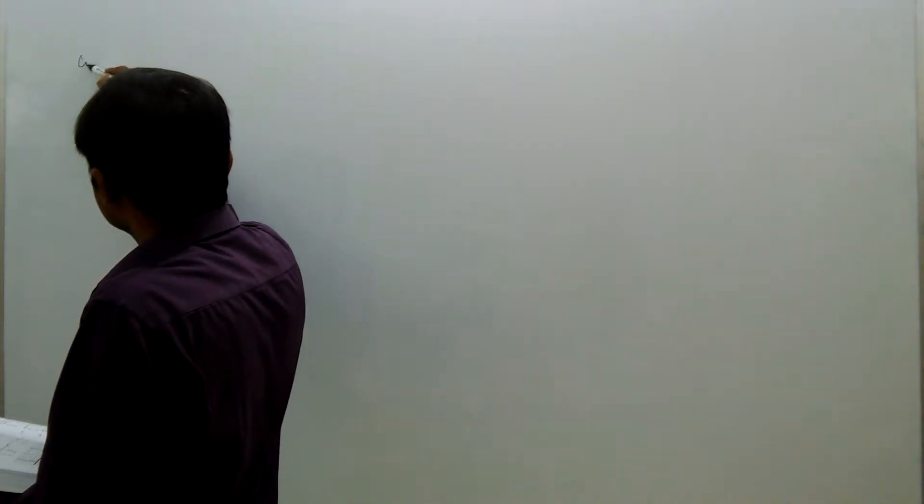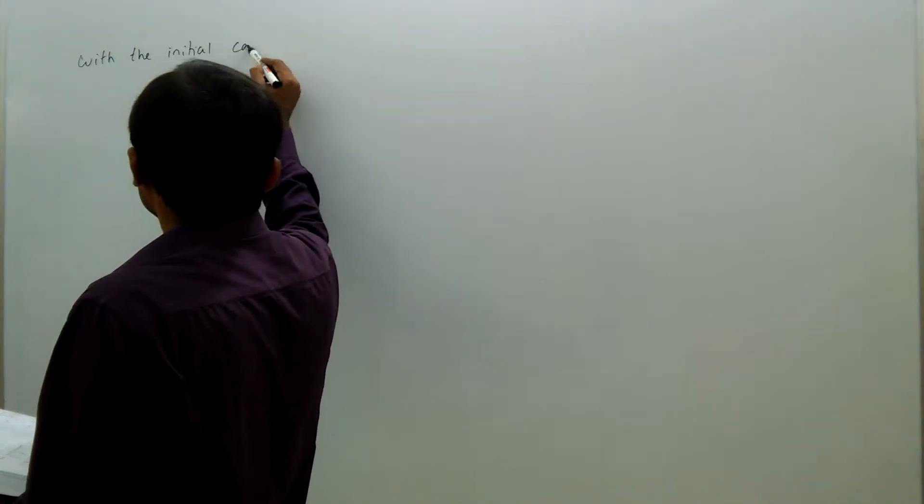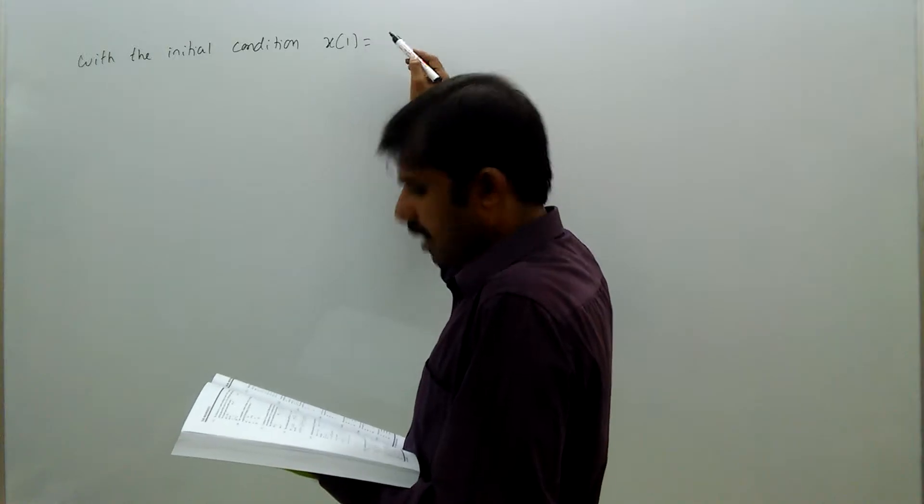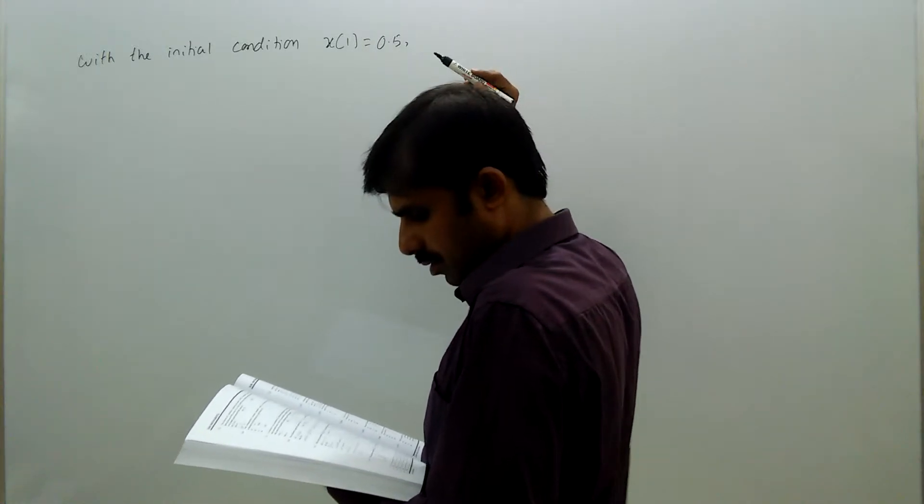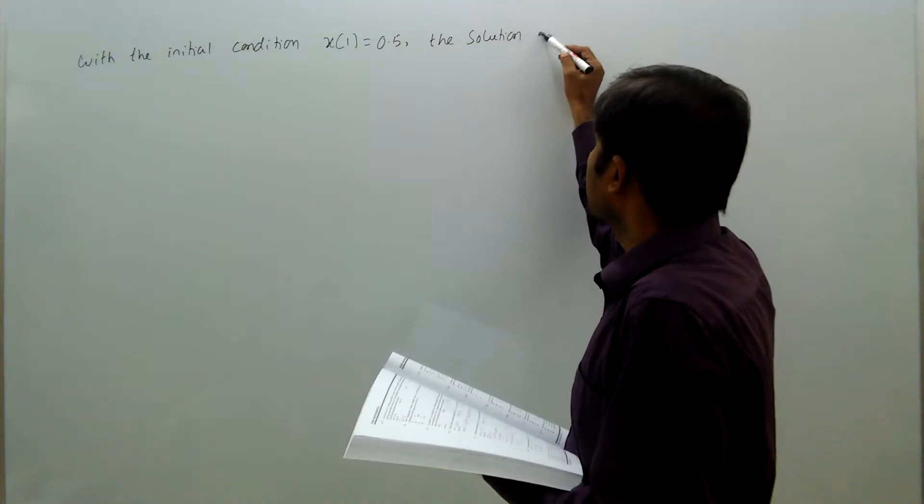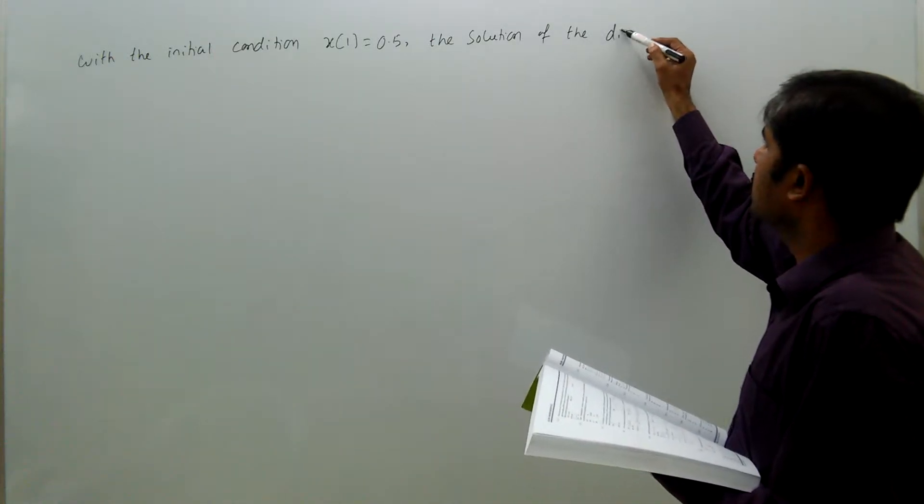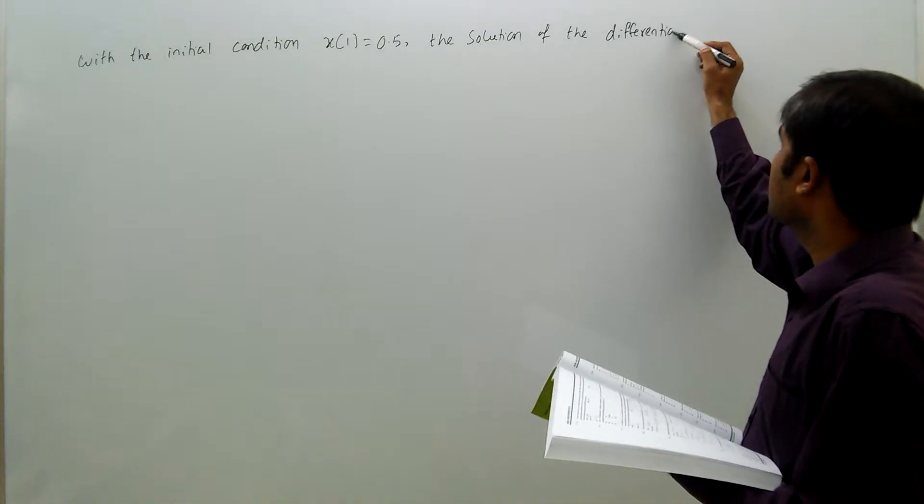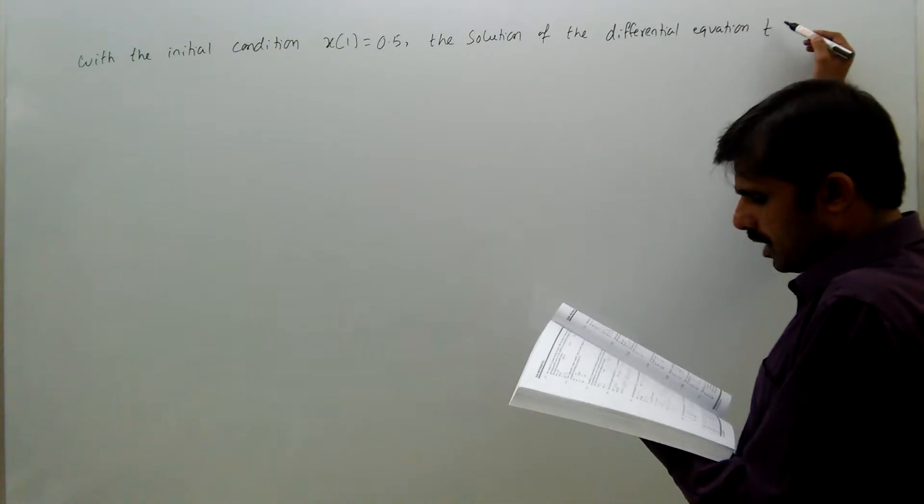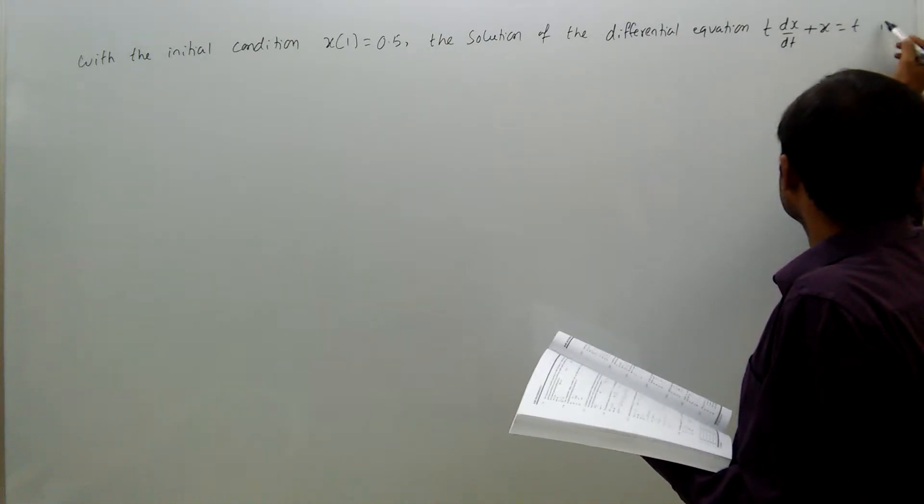With the initial condition x of 1 equal to 0.5, the solution of the differential equation t dx by dt plus x equal to t is: